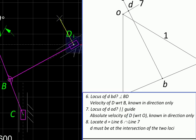The sense of the angular velocity can be found by the direction in which D is moving relative to B. So here the sense will be counterclockwise.